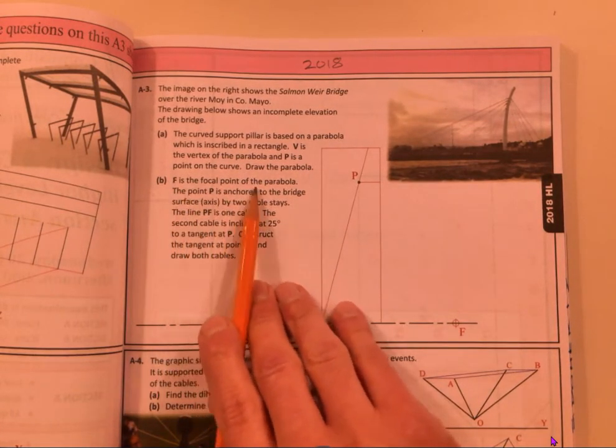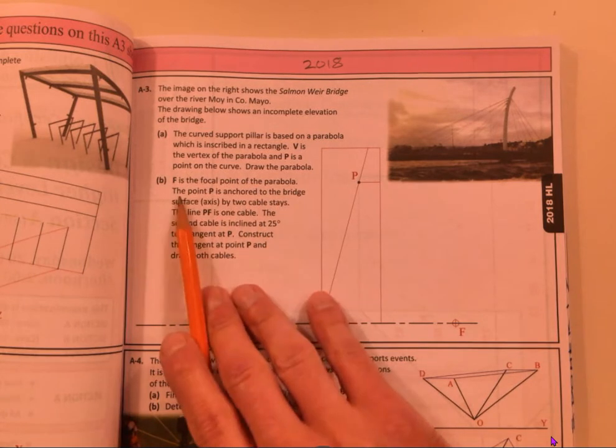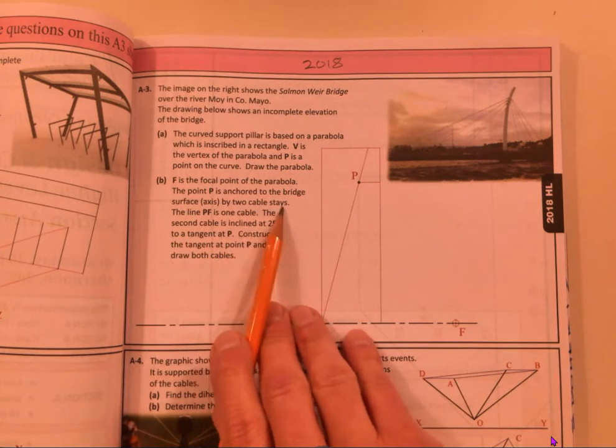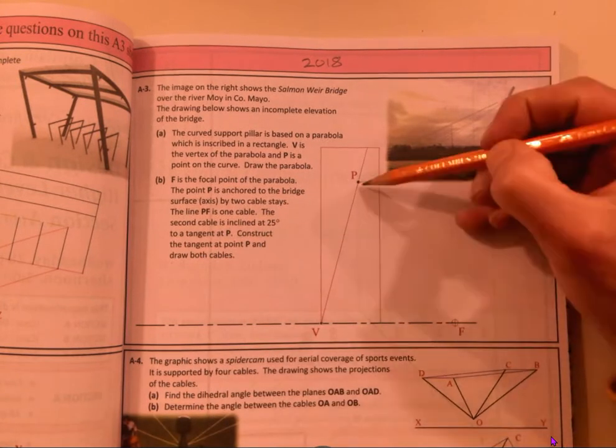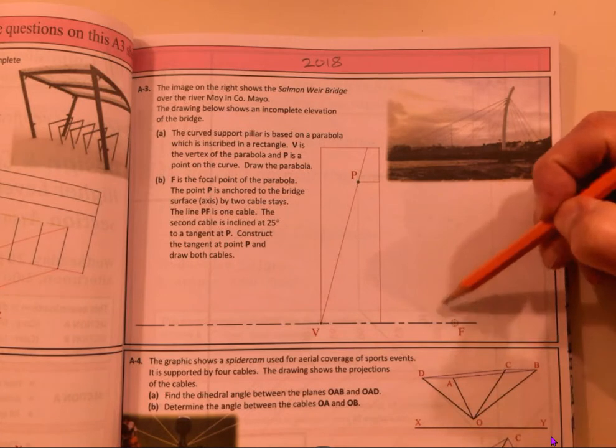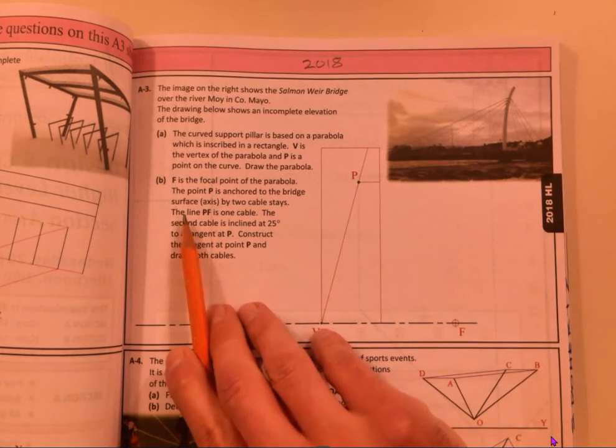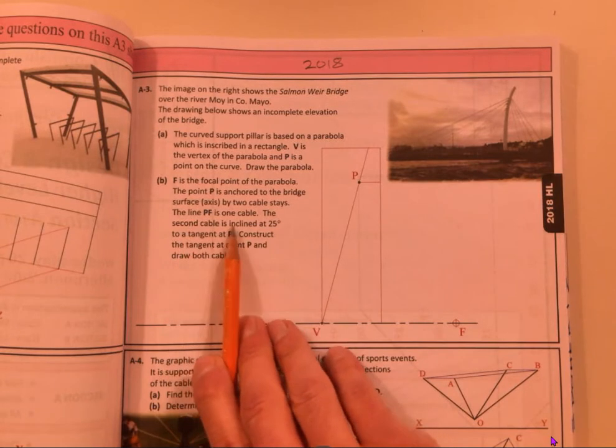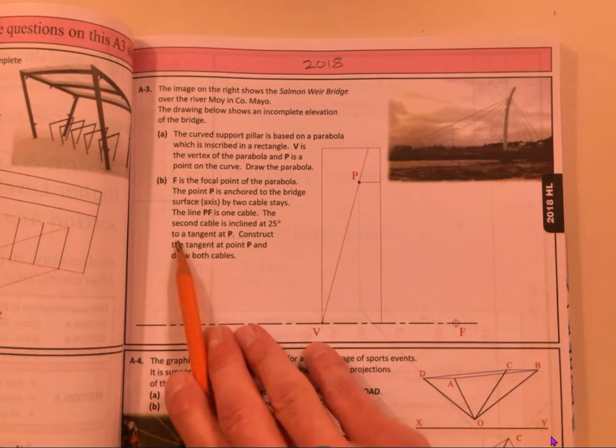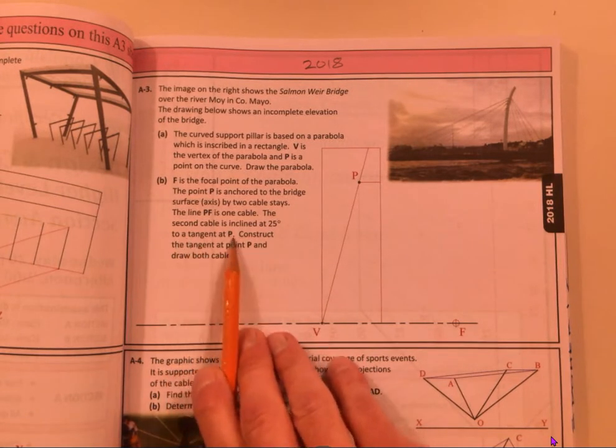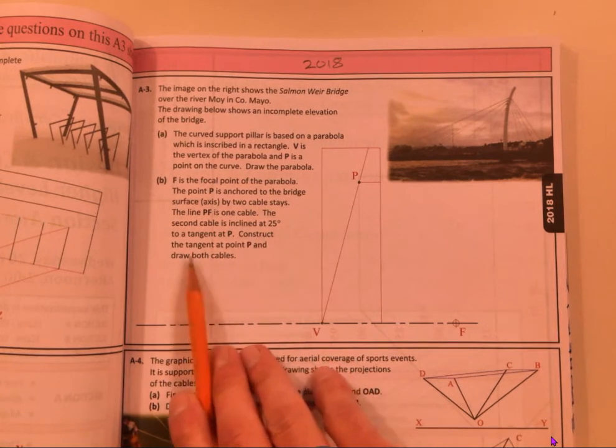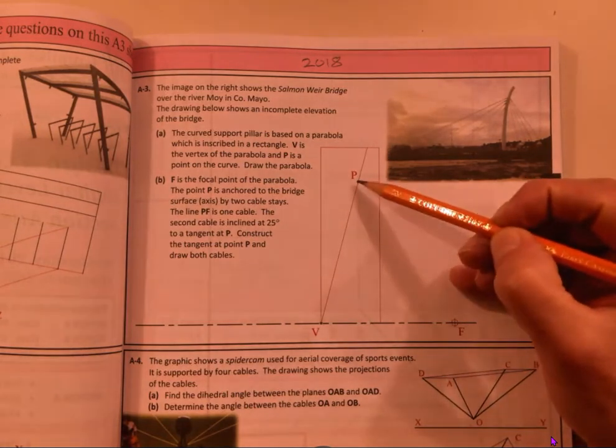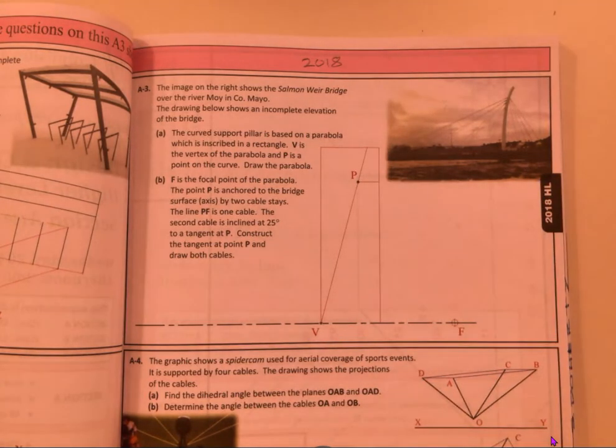Second part sounds tricky but it's not as bad as it sounds. F is the focal point on the parabola. P is a point anchored to the bridge surface by two cables. So you have F to P, so basically what they're saying is that is a line, the line PF is one cable. The second cable is inclined at 25 degrees to a tangent at P. Construct a tangent at point P and draw both cables. So they want us to draw a line to this, they want us to draw a tangent at point P.